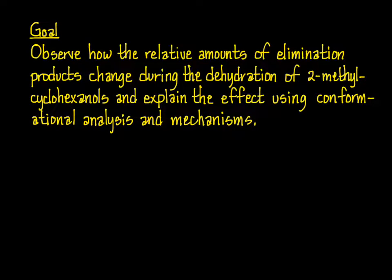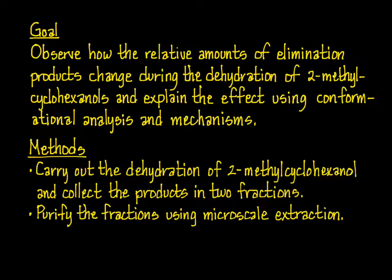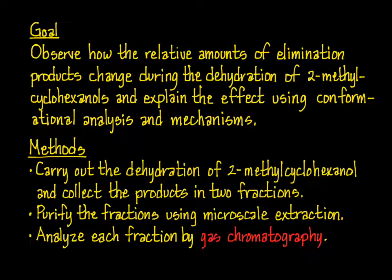The goal of this experiment is to see how the relative amounts of elimination products change during the dehydration reaction of a mixture of cis and trans 2-methylcyclohexanols, and then to explain that change using conformational analysis and an understanding of mechanisms. To achieve that goal, you'll carry out the dehydration on a microscale and collect the products in two small fractions. You'll then purify those fractions using a microscale extraction, and after drying, you'll analyze those fractions by gas chromatography.